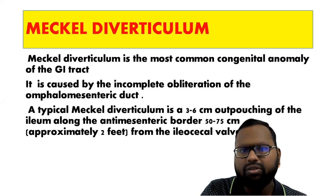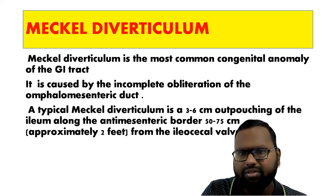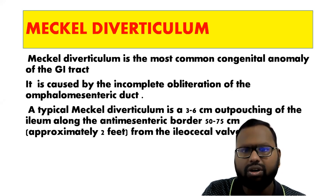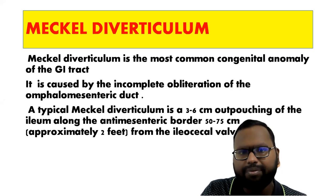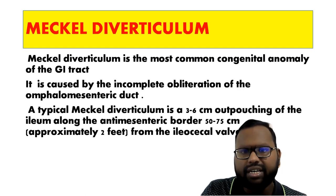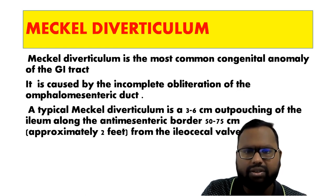Meckel's Diverticulum is an outpouching of the ileum, around three to six centimeters. It is located at the antimesenteric border, not the mesenteric border. This outpouching is two feet away from the ileocecal valve — this is frequently asked in exams.